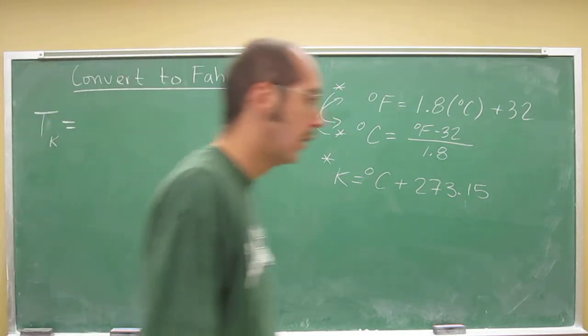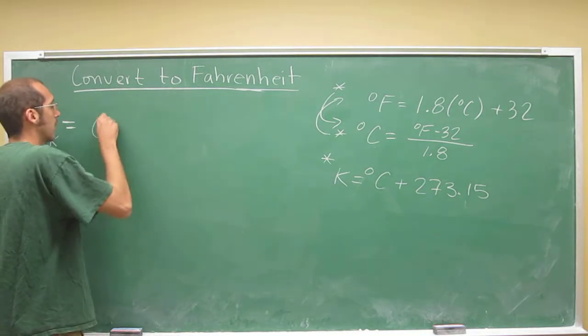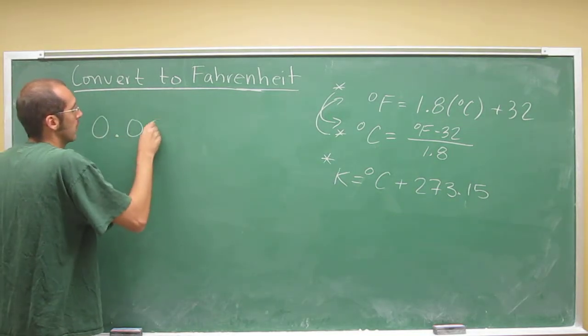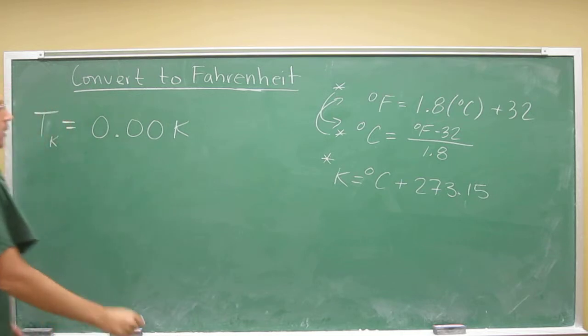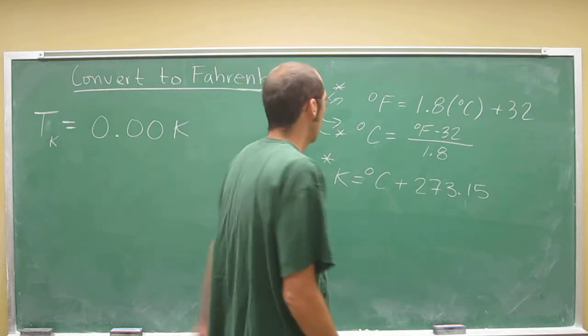Convert from Kelvin to Fahrenheit. And what was it? 0.00 Kelvin. So really, absolute zero. 0.00 Kelvin. And they want you to convert that to Fahrenheit. So the first thing you're going to want to do is convert it to Celsius first.